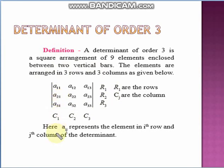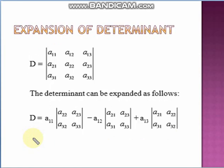In general, aij represents the element in the i-th row and j-th column of the determinant. Now let us see the expansion of the determinant. The determinant can be expanded as follows.